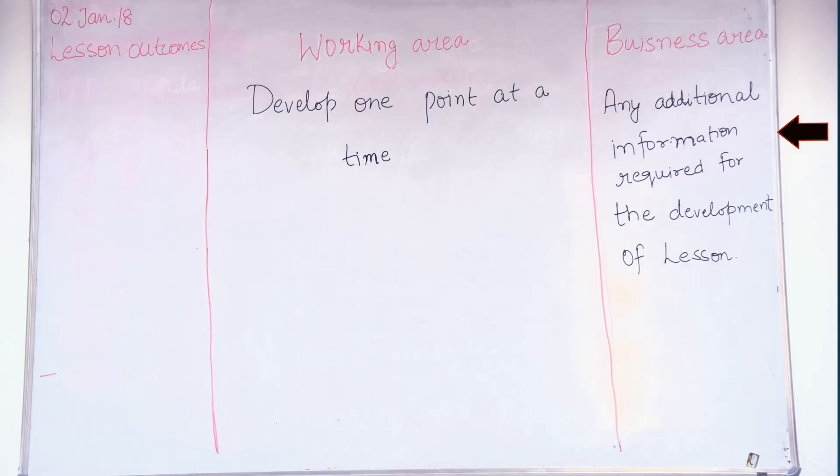The business area of the board is the right column. In this area, any additional information — for example, a formula used repeatedly by the teacher, or any abbreviation that students need to know to understand the content — should be placed in the business area of the board.